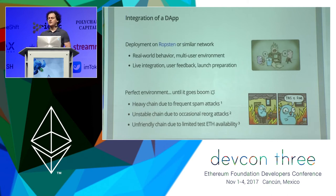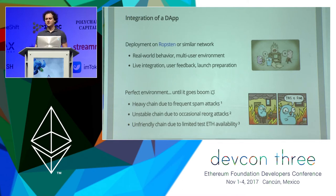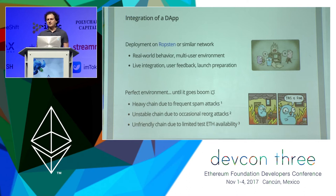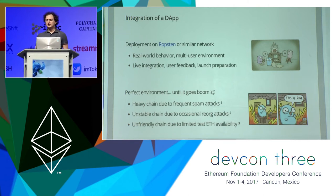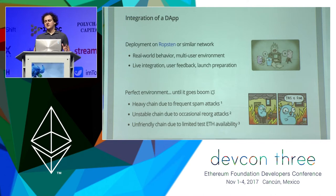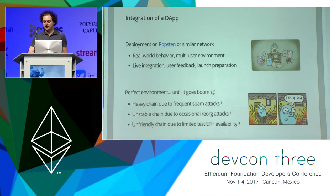After developers finish writing their code, usually the procedure is to deploy it on a testnet — either Ropsten or alternatives — because that's a real-world environment with many users. The problem is that this perfect testing environment often goes belly up. Test networks can be really heavy due to spam attacks or large projects like Raiden doing intensive tests. They can be unstable because somebody figures it would be fun to reorganize the chain. And it can often be unfriendly because you want to deploy but you don't have test ether.